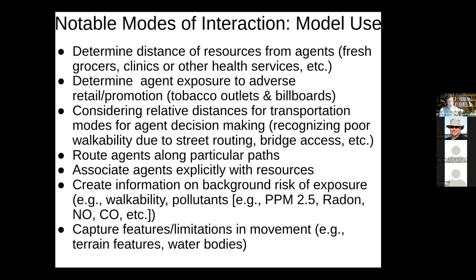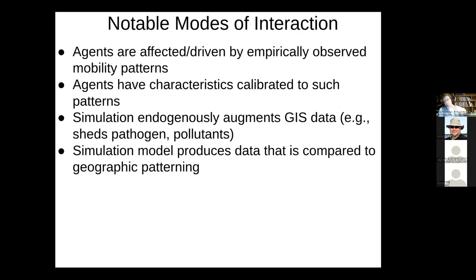Another need is capturing risk of exposure. We want to know how much agents are exposed to particulate pollution — PM2.5, radon levels, nitrogen oxides, or carbon monoxide. We're interested in tagging them with exposure to these components. If you have maps of superfund sites or pollution in the US, you might capture something like that. Finally, features or limitations in movement matter: if you're simulating mule deer behavior over a landscape for chronic wasting disease, certain terrain features might lead the deer to go certain ways, concentrating their presence and leading them to have exposure to prion-based diseases.